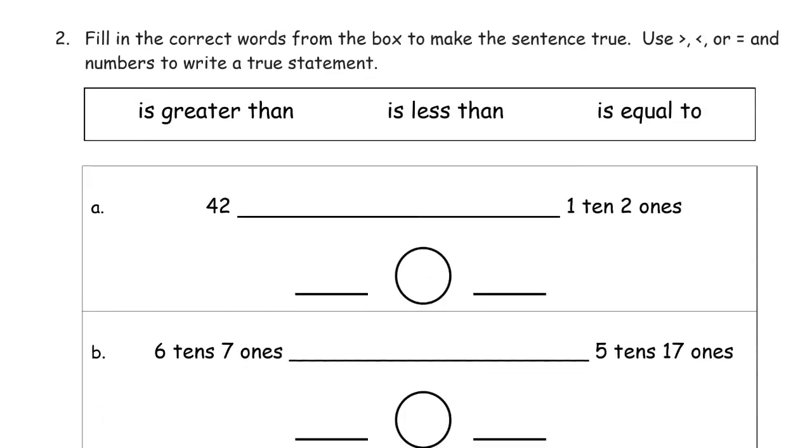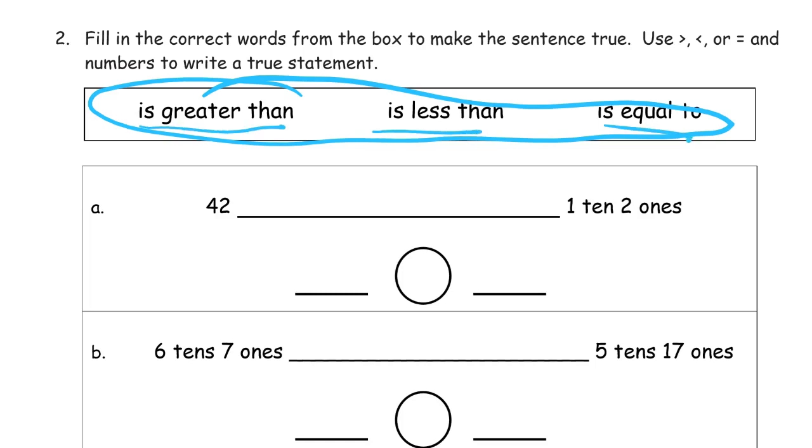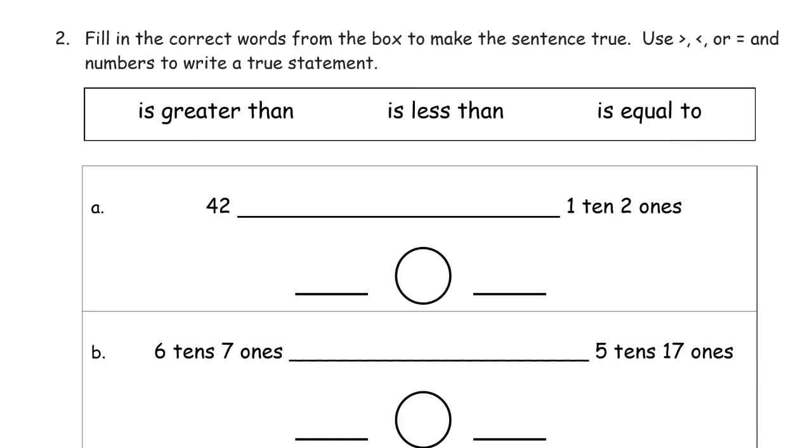Fill in the correct words from the box to make the sentence true. This is the box. So we're going to either write the words is greater than, is less than, or is equal to, and they're in that box for reason, so that we can copy them with correct spelling.